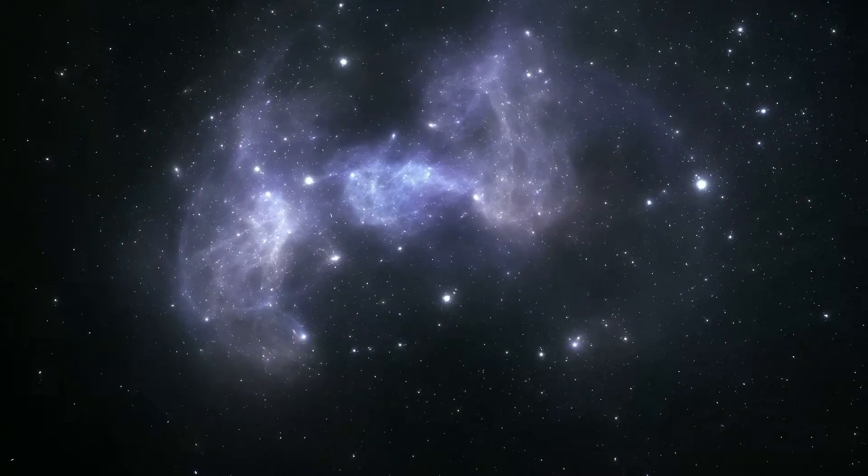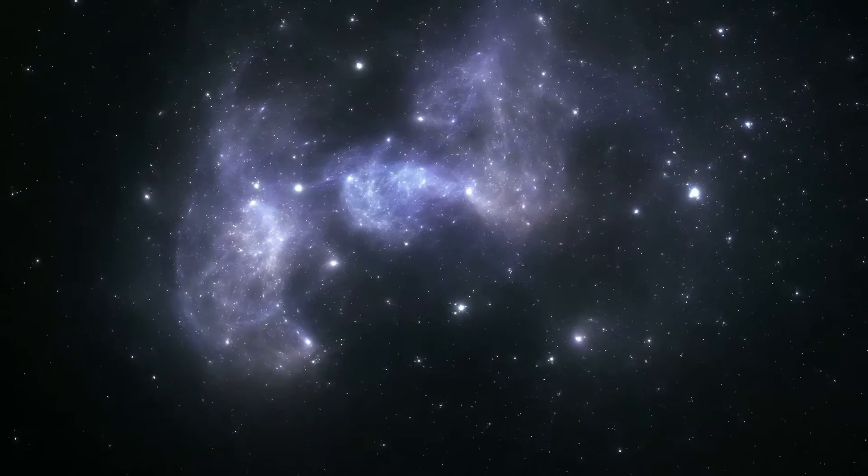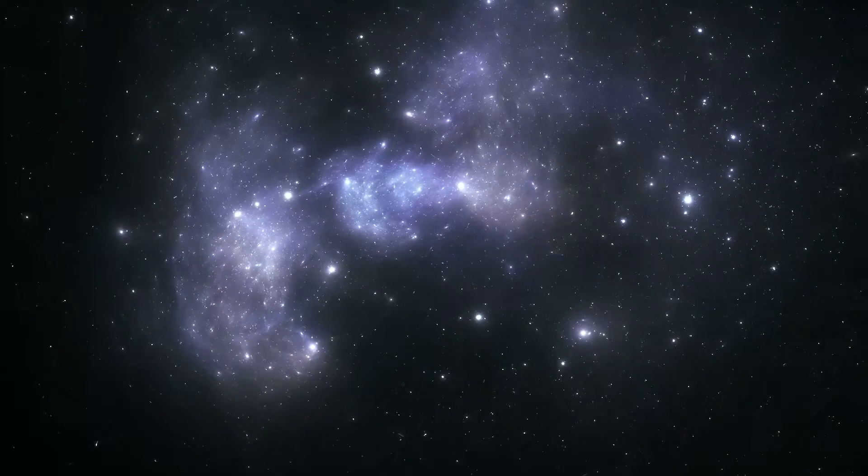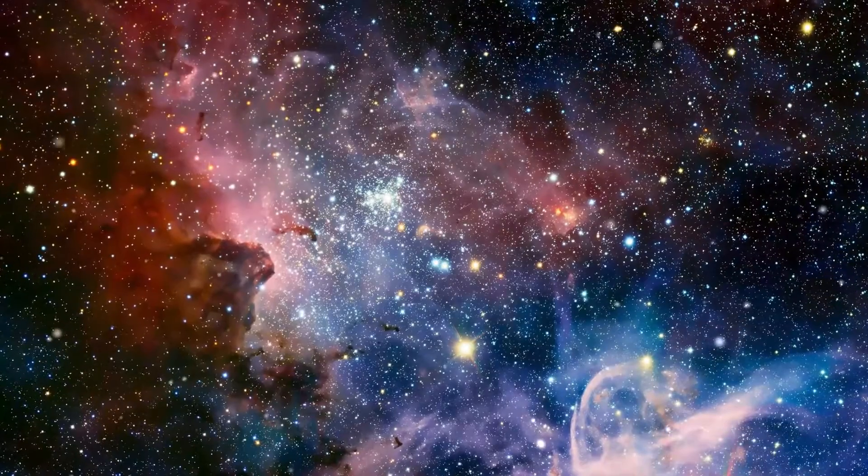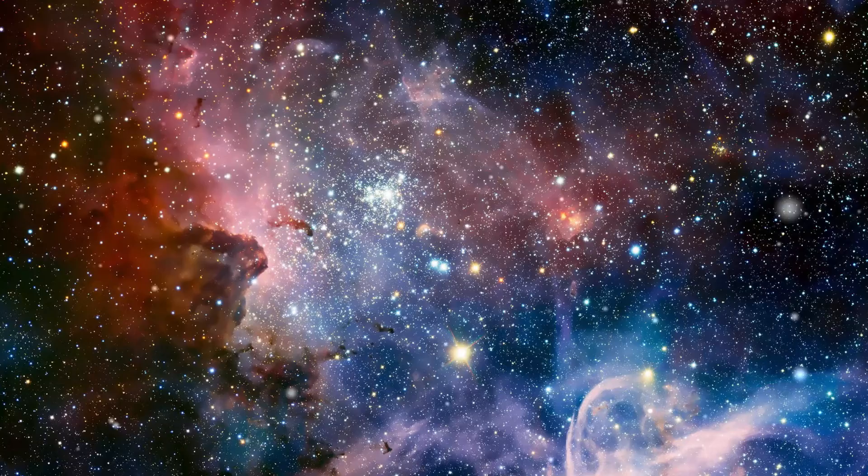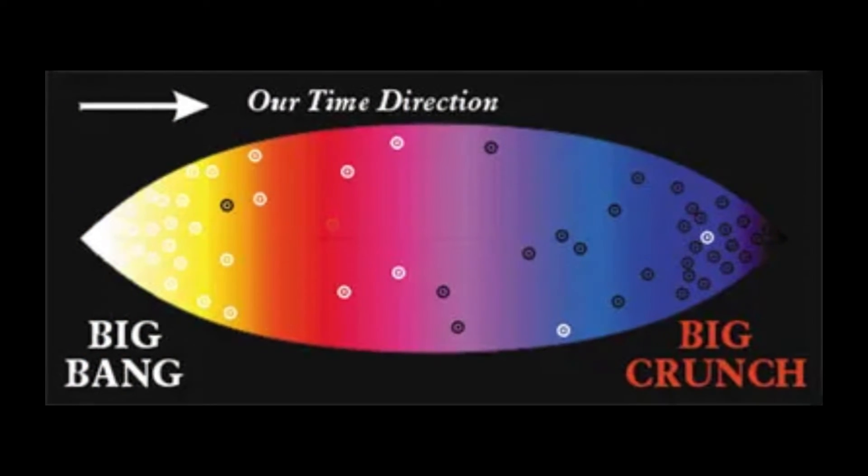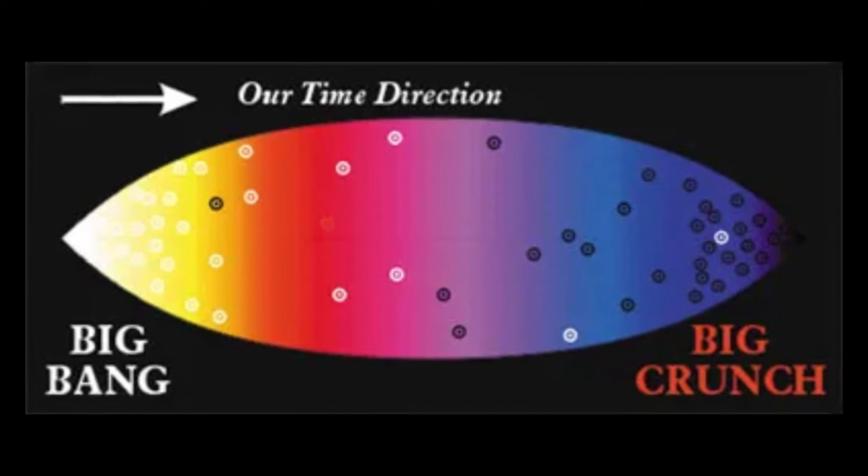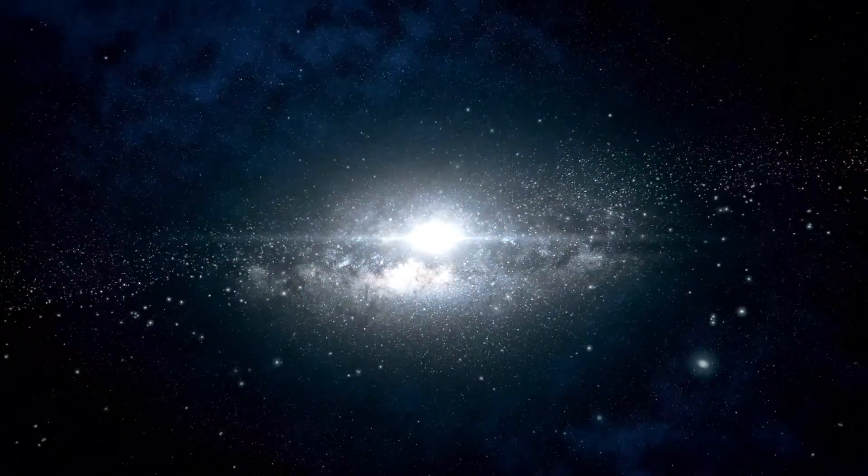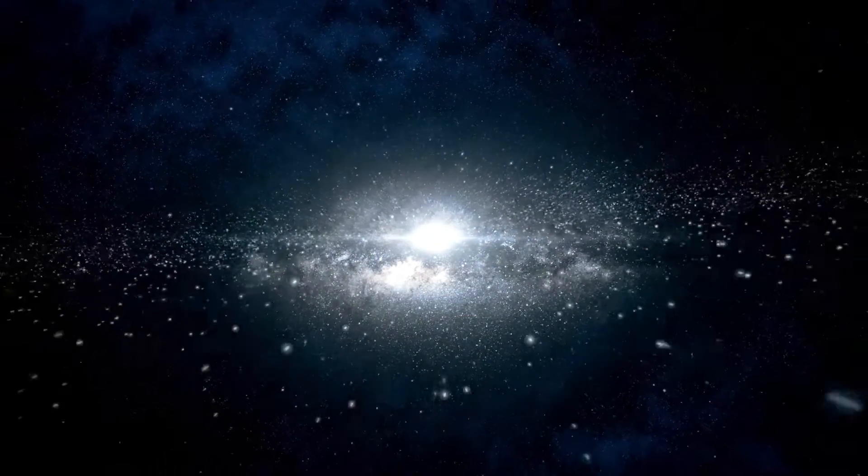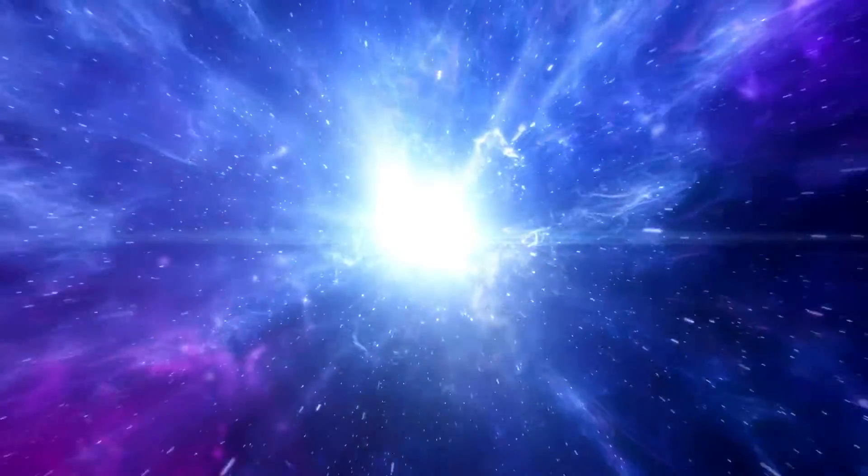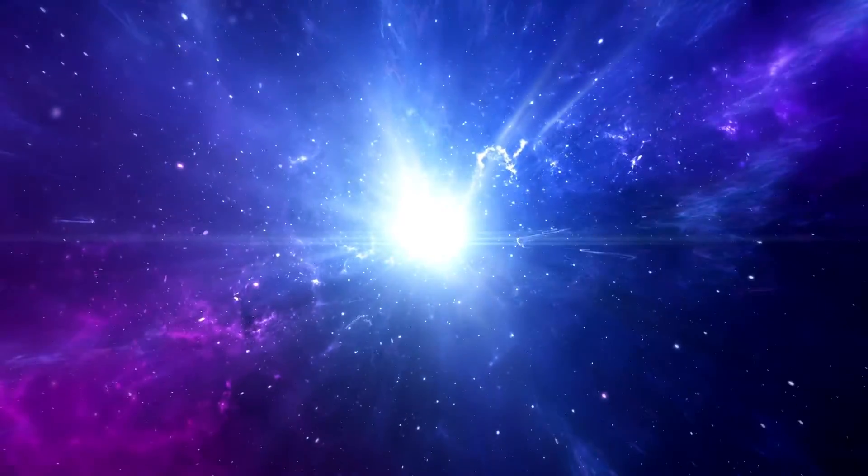As we understand more about the universe's beginnings, questions about its ultimate fate become more pressing. Current cosmological models predict several possible endings. The Big Crunch, a scenario where the universe's expansion eventually halts and reverses, leading to a catastrophic collapse back to a singularity, is one dramatic possibility. This scenario would mirror the Big Bang, potentially creating a cyclical model of universe death and rebirth.